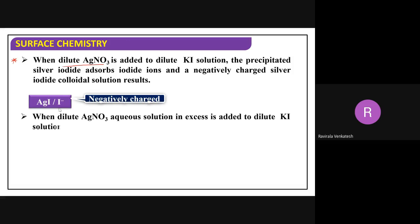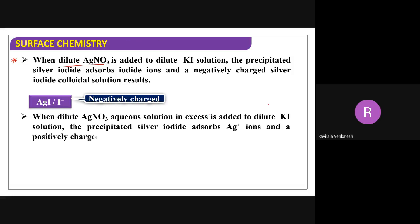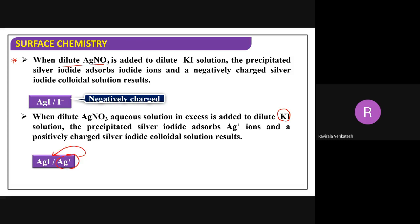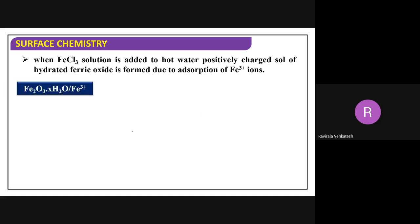When dilute AgNO₃ in excess is added to dilute potassium iodide solution, the precipitate of silver iodide adsorbs Ag⁺ ions, resulting in a positively charged silver iodide colloidal solution. Similarly, when iron chloride solution is added to hot water, a positively charged ferric oxide colloid is formed due to adsorption of Fe³⁺ ions.